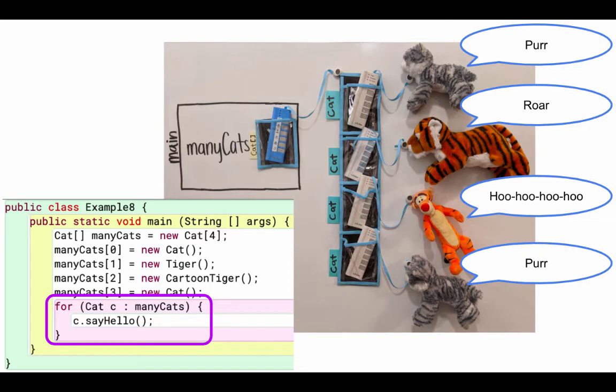But remember, when we call a method on an object, like when we call it on a cat or a tiger or a cartoon tiger, we look in that object's class for the method. And each of them had their own say hello method. So even though we were using a variable of the parent type of cat, they still all had their own way to execute this method.